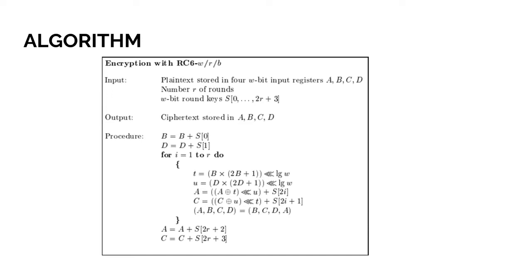After that we will do in the do loop. T equals B times (2B plus 1) triple-less-than log W. U equals D times (2D plus 1) triple-less-than log W. A equals (A exclusive or T) triple-less-than U plus S2i. C equals (C exclusive or U) triple-less-than T plus S(2i plus 1). Then ABCD equals BCDA. Then it will end, then it will do loop. It will go then A equals A plus S(2r plus 2). Then C equals C plus S(2r plus 3).